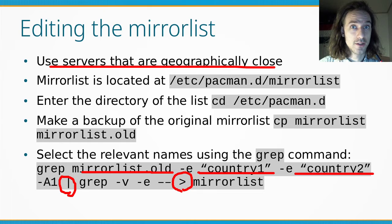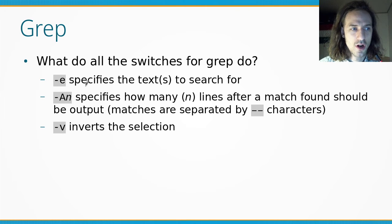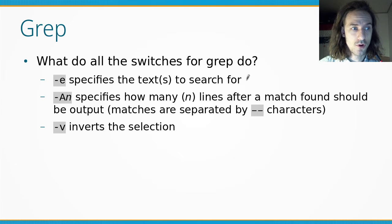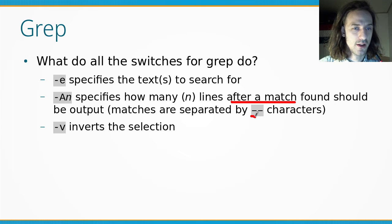The grep command searches for words or text in a file. We typed the command with the file name and used -e to specify the text to search for. With just -e, it would only list lines containing the search text, but we used -A (capital A) followed by a number: -A1 means one line after the match, -A2 would mean two lines after, and so on. The matches are separated by double dashes when using -A.